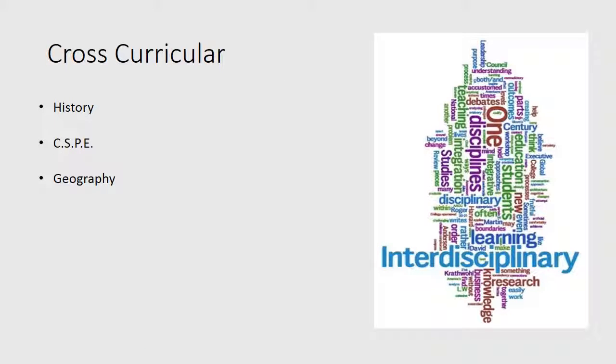While teaching this text, there are also a number of cross-curricular links, most notably in history and CSPE, especially in relation to the context of the novel when we talk about the Great Depression and the American Dream. Also geography, in relation to the agricultural landscape of the Salinas Valley. All of these links can be discussed further throughout lessons with students.